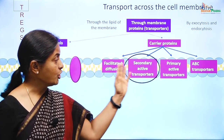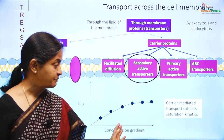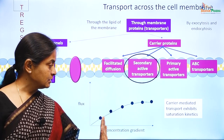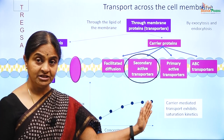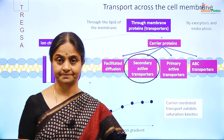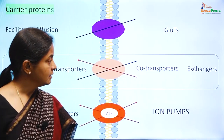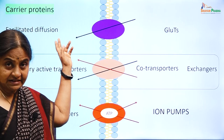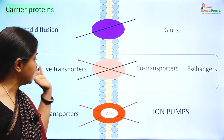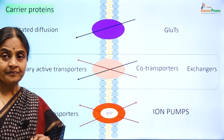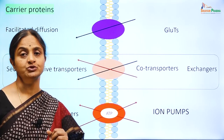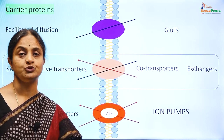The secondary active transporters, just like all other carrier proteins, exhibit saturation kinetics — the flux saturates at a certain concentration gradient. While the facilitated diffusion transporters were generally uniports, the secondary active transporters transport at least 2 substances. Most often these are 2 substances, though sometimes there may be more than 2.